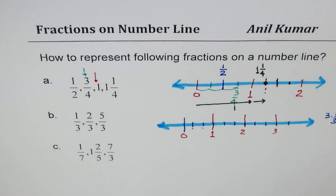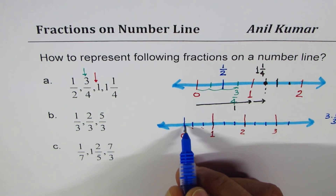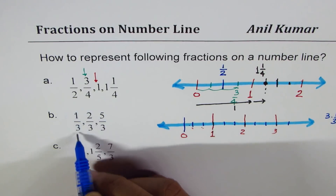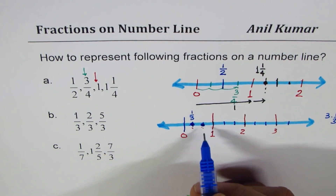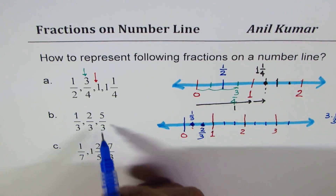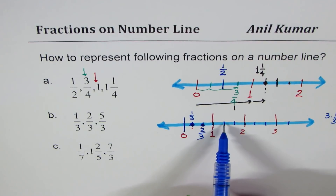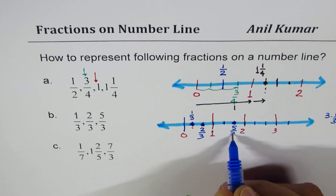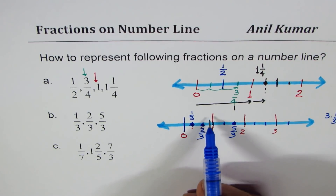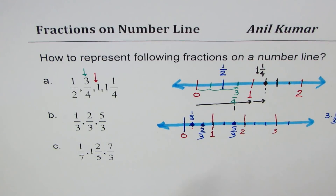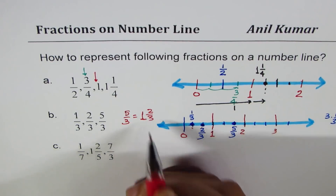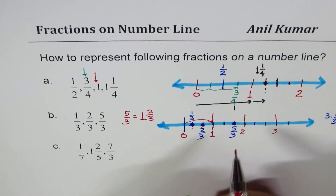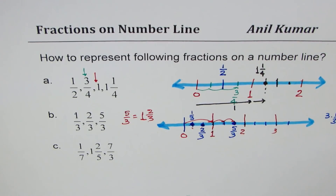Let's mark 1/3: we divide 0 to 1 into three equal parts and the first position is 1/3. Two thirds is the second position. For 5/3, we count: 1/3, 2/3, 3/3, 4/3, 5/3 — that becomes five out of three. You can also write 5/3 as 1 whole and 2/3, since one whole plus two one-thirds gives you five thirds. So 5/3 is greater than 1.